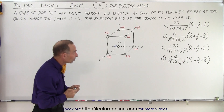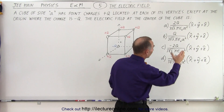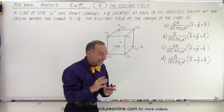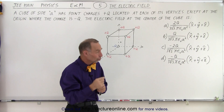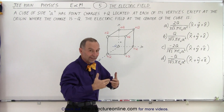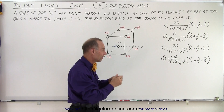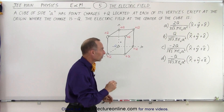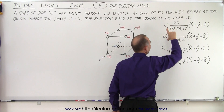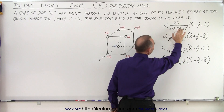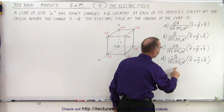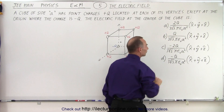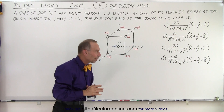Now we have four possible answers, and notice they look quite complex — they're in vector notation. The way it's written indicates that the X, Y, and Z components of the electric field vector at the center all have the same magnitude. Notice that two answers are positive and two are negative, and the denominators of every answer are exactly the same. The numerator is either a two or a one, and it's either positive or negative. So that helps us come up with a strategy.